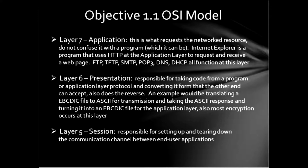Layer seven, the application layer, is what requests the network resources. Don't confuse it with a program — it can be a program, but it doesn't necessarily have to be. A great example is Internet Explorer, a program that uses HTTP at the application layer to request and receive a web page. FTP, TFTP, SMTP, POP3, DNS, DHCP — all of those function at the application layer, and there are many more you can look up.